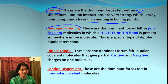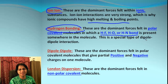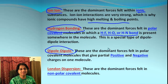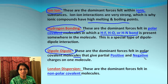The next one is hydrogen bonding. These are dominant forces present in polar covalent molecules, and they should have one of these bonds: hydrogen and fluorine, hydrogen-oxygen, or hydrogen and nitrogen somewhere in that molecule. This is a special type of dipole-dipole interaction, and we classify that as hydrogen bonding. The third one is dipole-dipole, and this occurs as a dominant force when we have polar covalent molecules. In this case, the two ends of the molecule will appear to have opposite charges — one end will be positive and the other will be negative.